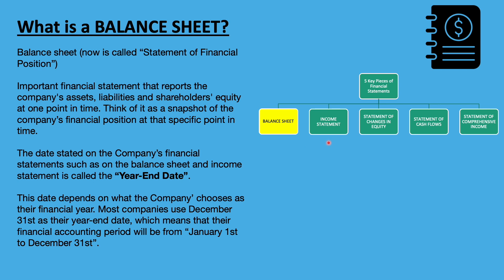The five financial statements are: the balance sheet, income statement, statement of stockholders' equity, statement of cash flows, and statement of comprehensive income. The date stated on the company's financial statements, such as on the balance sheet and income statement, is called the year-end date.